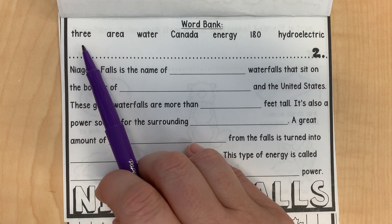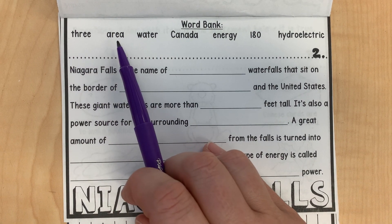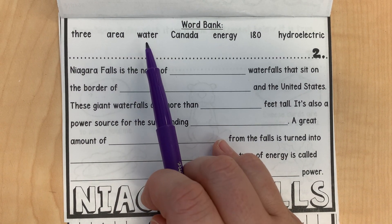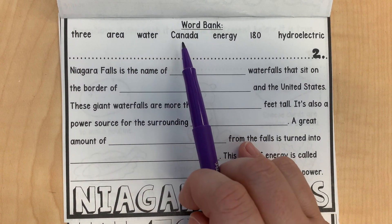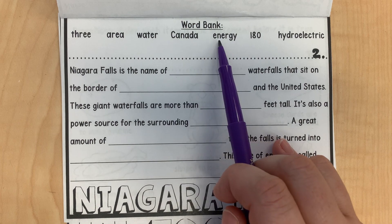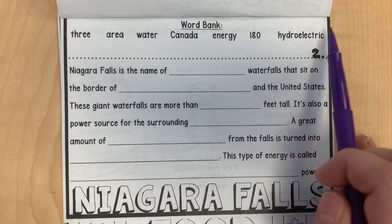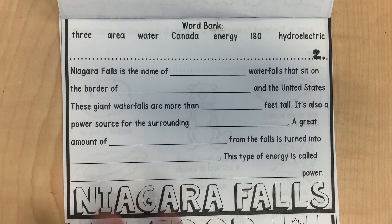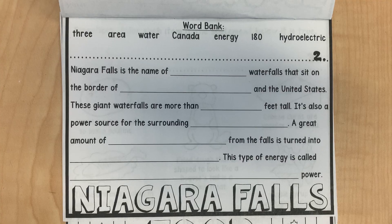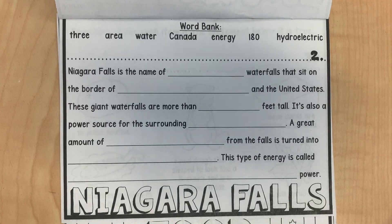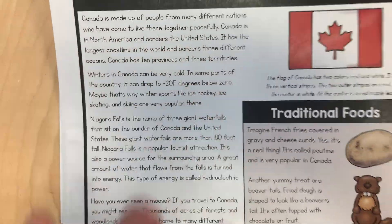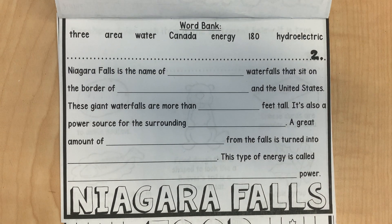Our word bank is: three, area, water, Canada, energy, 180, hydroelectric. If you want to do this on your own, you can — this has all of the answers in it. I read this in a video before this too, just a heads up. It's totally up to you whether you want to do this with me or do this on your own.